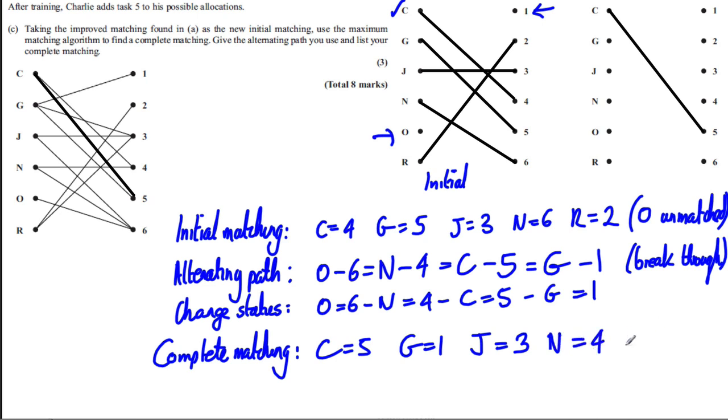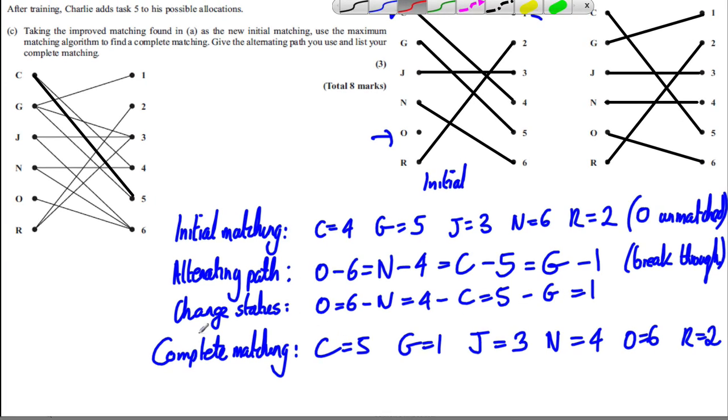So let's just draw the picture. And double check. It's all complete. G is with 1. J is with 3. N is with 4. O is with 6. And R is with 2. And I'm done. There's my complete matching. And I'm complete.